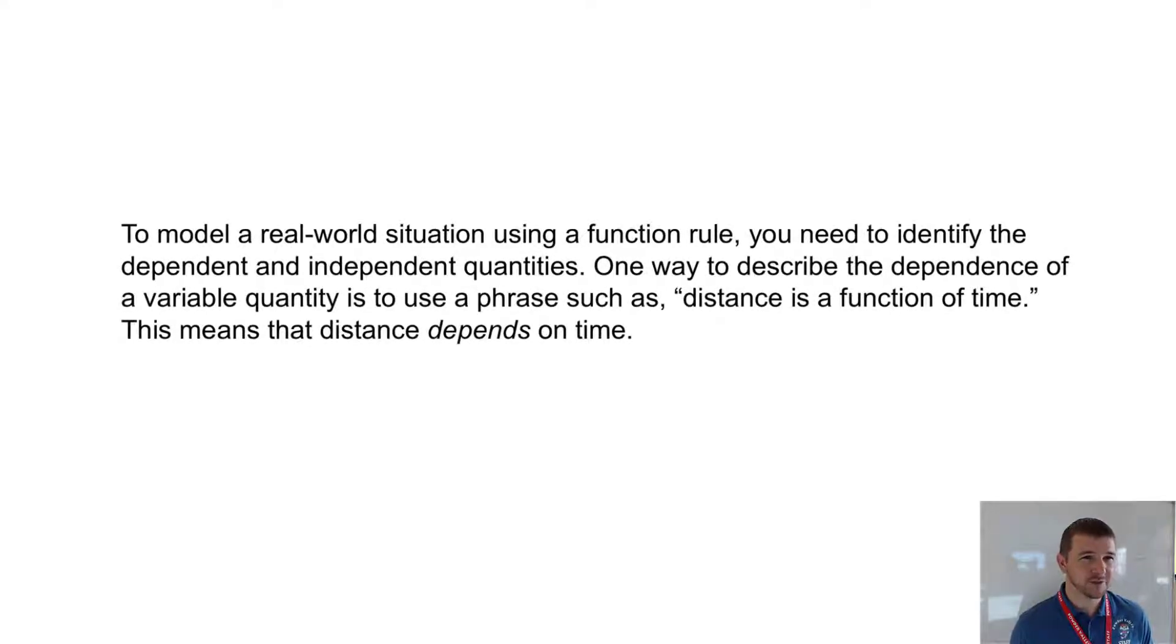To model a real-world situation using a function rule, you need to identify the dependent and independent quantities. One way to describe the dependence of a variable quantity is to use a phrase such as, distance is a function of time. This means that distance depends on time.